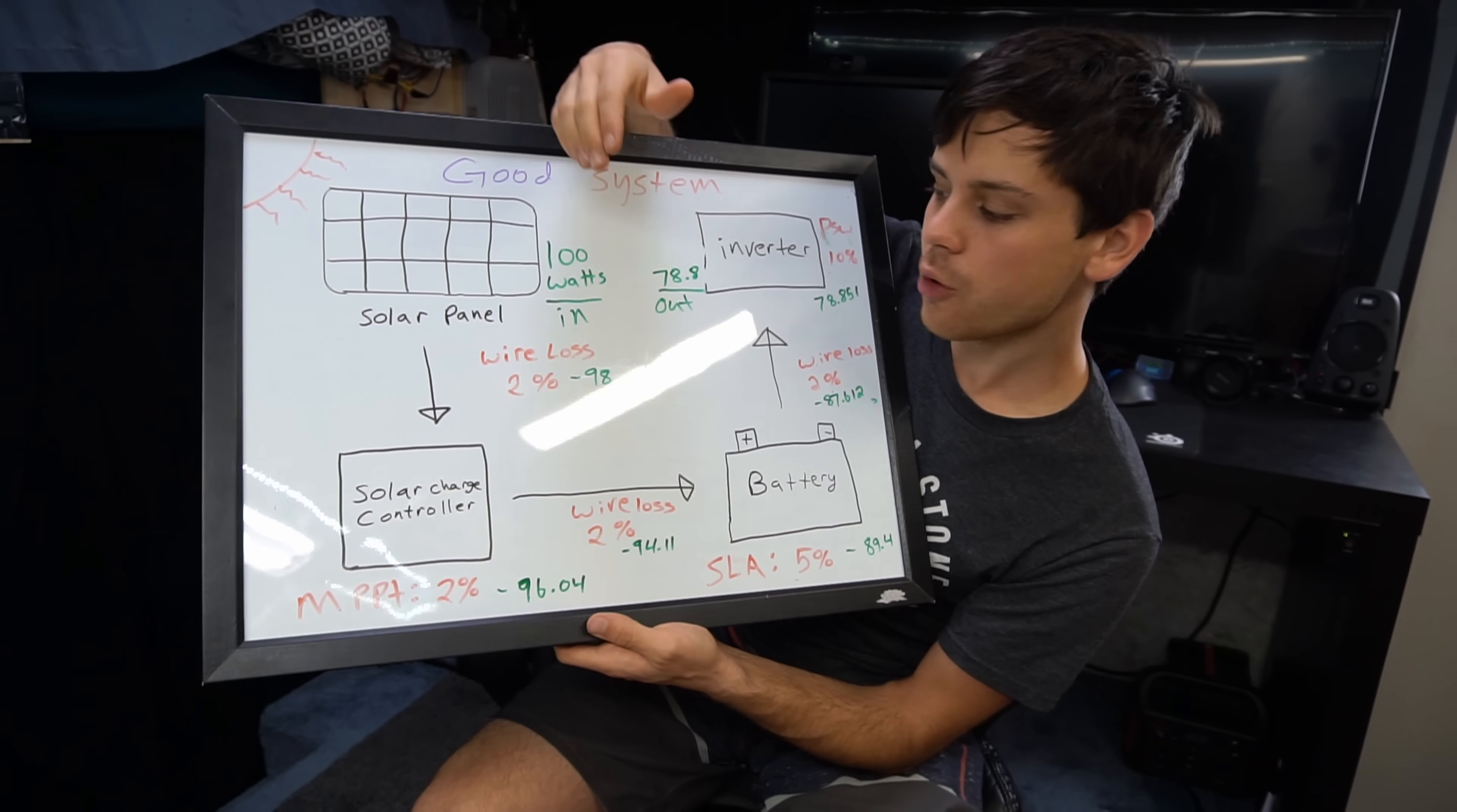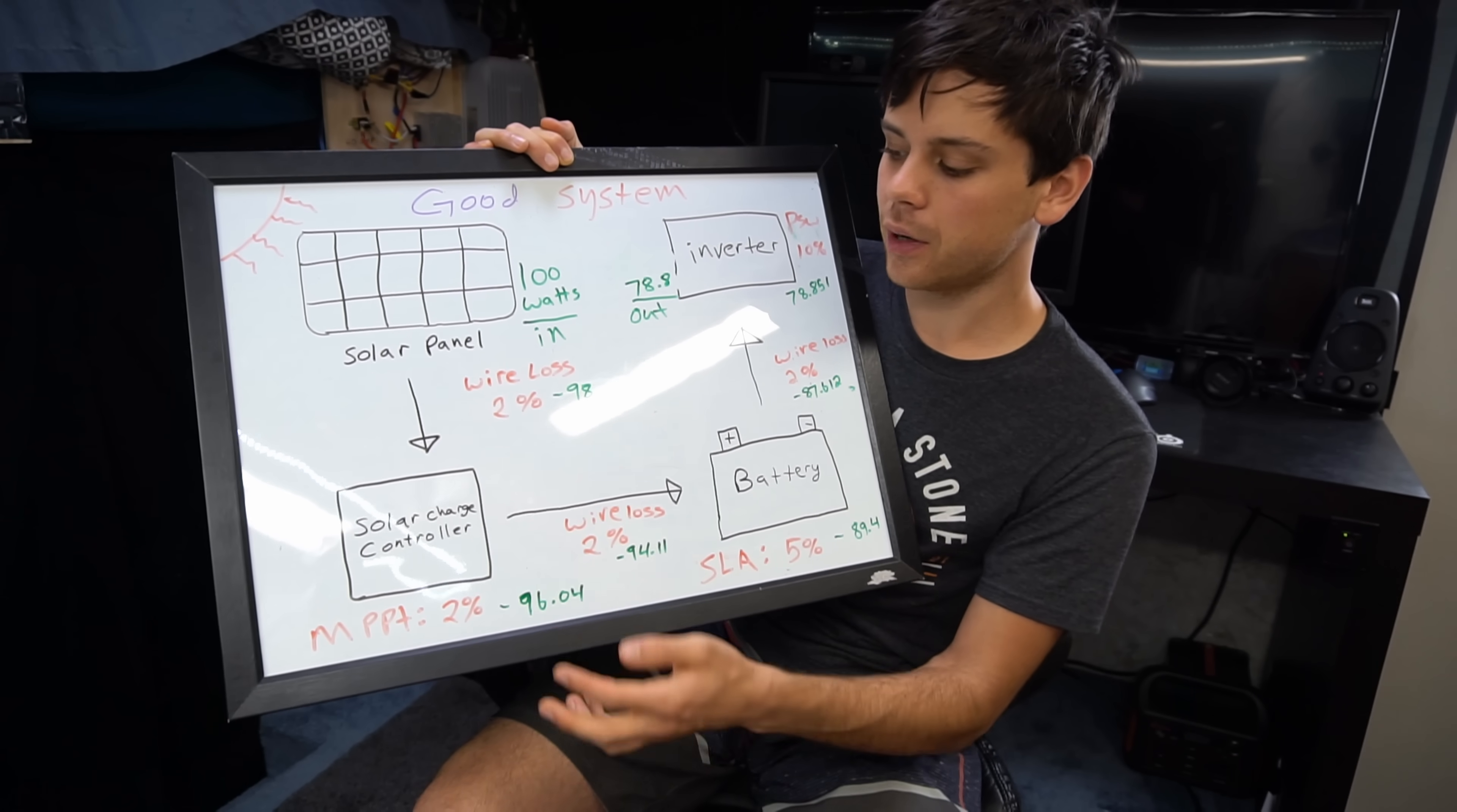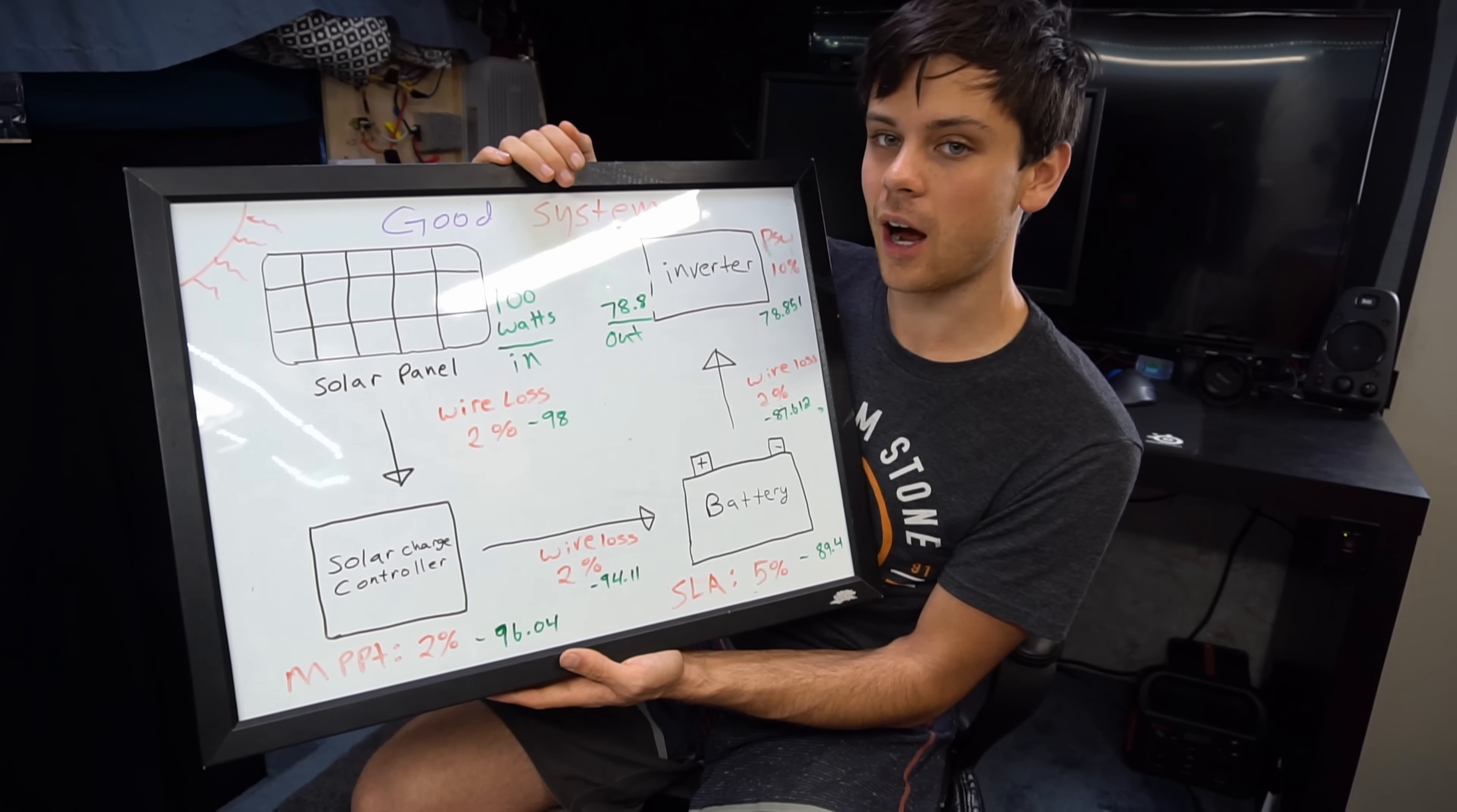You use the right components and the right wire and you are getting so much power out of your system. A lot of people think, oh I'm using cheaper components so the whole system's cheaper. Yes but if you use the right components it's actually cheaper because you're producing so much more power for the price. So it actually saves yourself a lot of money to design a good system in the end because it produces so much more power.